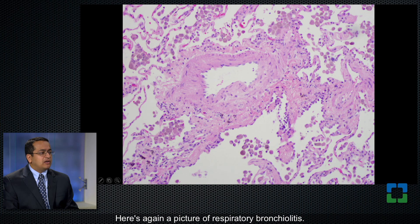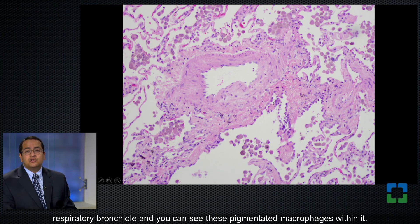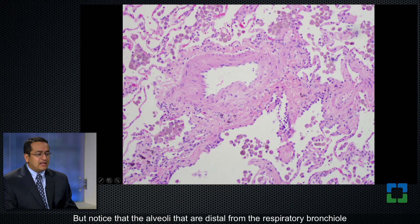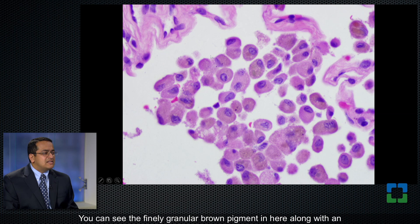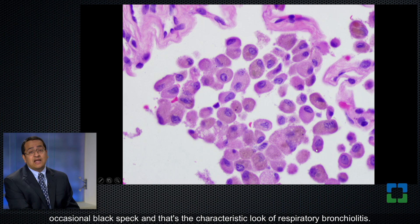Here's again a picture of respiratory bronchiolitis. This structure is a small pulmonary artery, and next to it is a respiratory bronchiole with pigmented macrophages within it. Notice that the alveoli distal from the respiratory bronchiole also have these macrophages — and it's still just respiratory bronchiolitis; it doesn't turn it into any other kind of entity. At high magnification you can see the finely granular brown pigment along with an occasional black speck, which is the characteristic look of respiratory bronchiolitis.